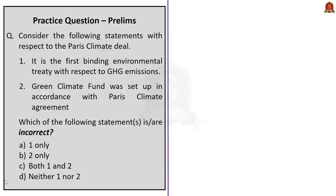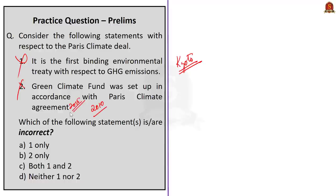With reference to the Paris Climate Deal, consider the following statements. Statement 1: It is the first binding environmental treaty with respect to greenhouse gas emissions — this is incorrect because we have binding treaties like the Kyoto Protocol even before the Paris Agreement. Statement 2: The Green Climate Fund was set up in accordance with the Paris Climate Agreement — this is also incorrect because GCF was set up by UNFCCC as far back as 2010, while the Paris Agreement was finalized in 2015. Since we are to identify incorrect statements, the correct answer is option C — both 1 and 2.